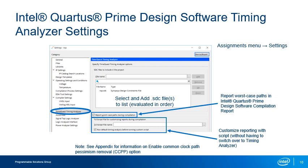Timing Analyzer settings also contain options for generating timing reports directly in the Intel Quartus Prime software. With the options indicated, you can enable the reporting of worst-case paths in the compilation report and select a TCL script to customize the timing reports generated during compilation. Normally, the timing reports generated in the compilation report are very basic, requiring you to switch back to the Timing Analyzer interface for more detailed, customized reports. With these options, you can generate the same detailed reports in the Intel Quartus Prime compilation report without having to switch.